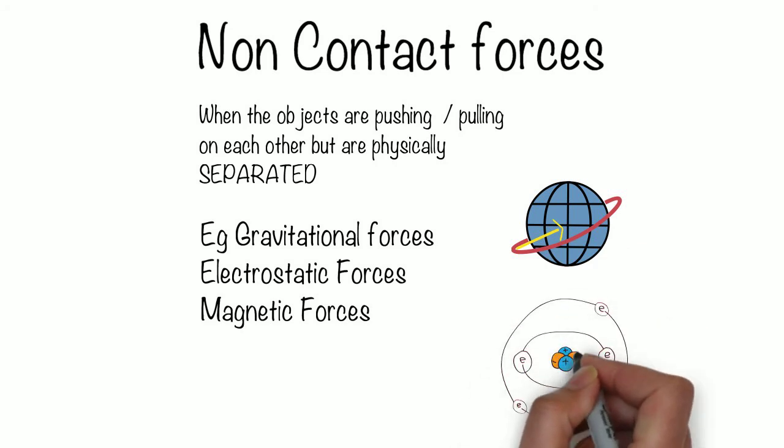In this picture you can see electrons orbiting the nucleus of an atom. This again is an example of a non-contact force. It's due to the electrostatic attraction between the positive nucleus and the negative electrons.